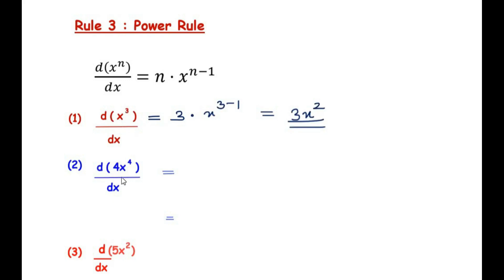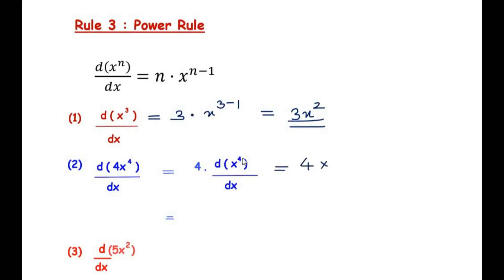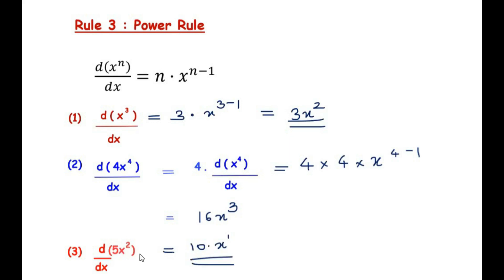The second example is the differentiation of 4x⁴. Since 4 is a constant we take it out: 4 × d/dx of x⁴. Applying the power rule, the power 4 comes out giving 4×4 = 16, and the power reduces to 4−1=3, so the answer is 16x³. For the third example with 2x⁵, there is a shortcut: multiply the power 5 with the constant 2 to get 10, then x to the power 5−1=1, giving 10x directly.